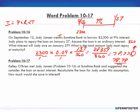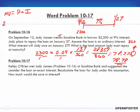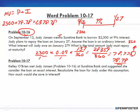The maturity value equals Principal + Interest: $2,300 + $78.78 = $2,378.78. That's the total amount Jody must repay at maturity. That's problem 10-16 — as you can see, it's all repetitive.